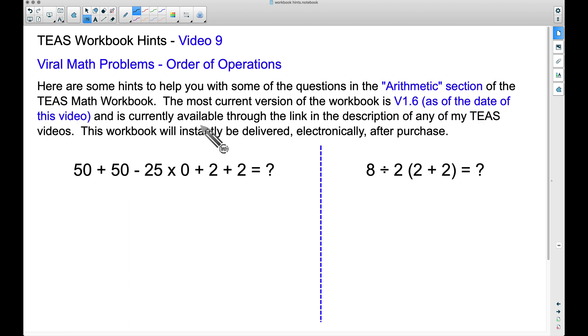Let's look at this first example. We have 50 + 50 - 25 × 0 + 2 + 2. Order of operations: we don't see parentheses, we don't see exponents, you know, Please Excuse My Dear Aunt Sally.